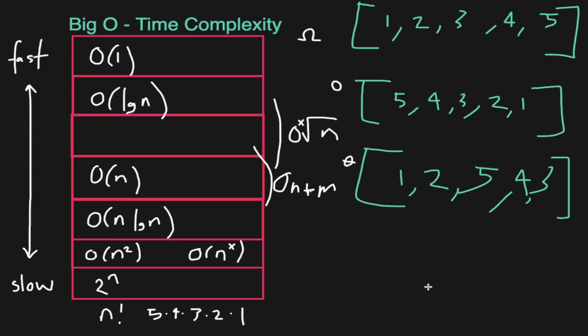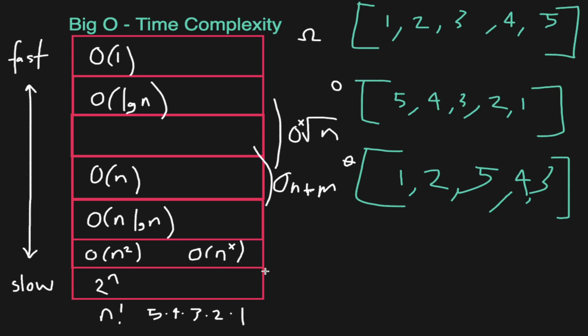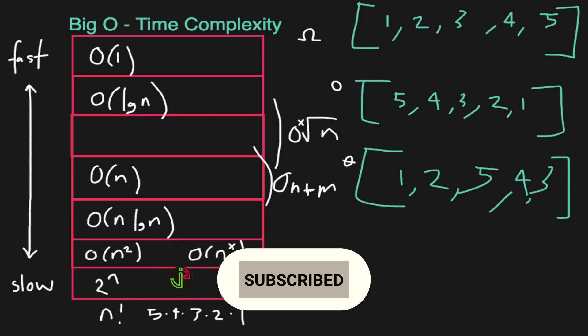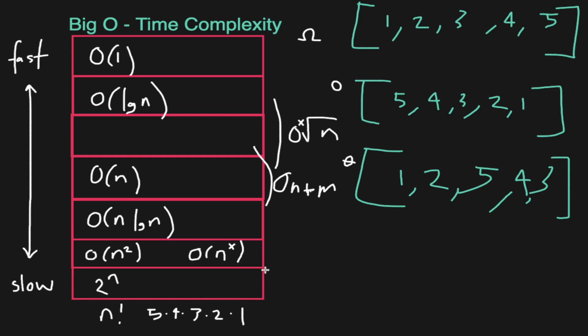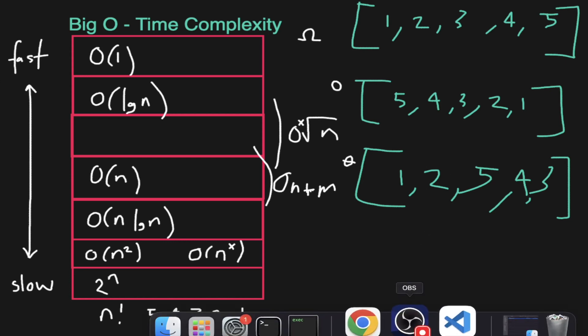That was probably a lot of information in this video, and I've really tried to spell things out and make it as easy as possible to understand. In the next video, we're going to discuss logarithmic time complexity, because it's really important in solving problems — to understand what that means, we have to understand what a logarithm means. After that, those are the main concepts we need to know for data structures and algorithms, and then we'll jump into array data structures and start solving problems. Thanks so much for watching, see you in the next video!